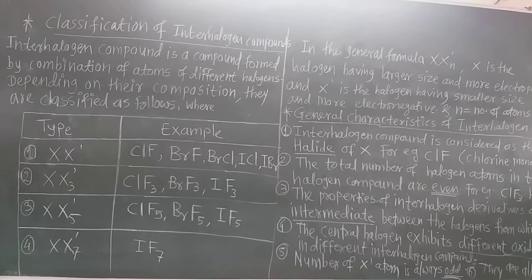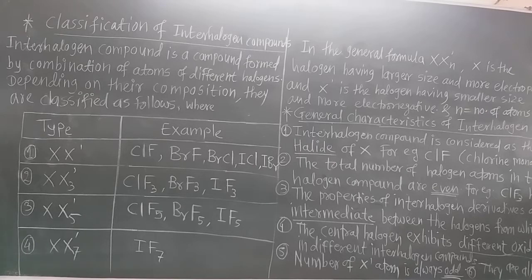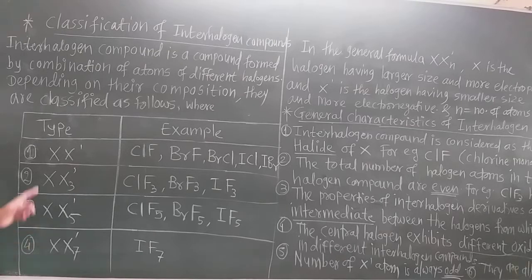These XX' type interhalogen compounds are also called monohalides of the electropositive halogen. For example, ClF is called chlorine monofluoride. BrF is bromine monofluoride. BrCl is bromine monochloride. ICl is iodine monochloride. Mono means only one of the more electronegative halide X'.